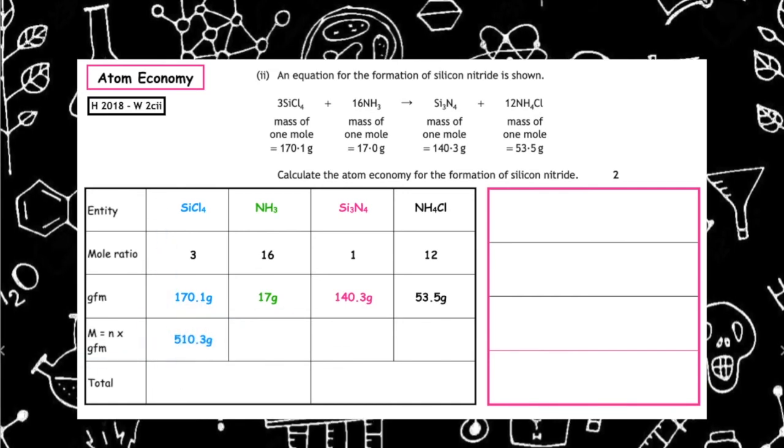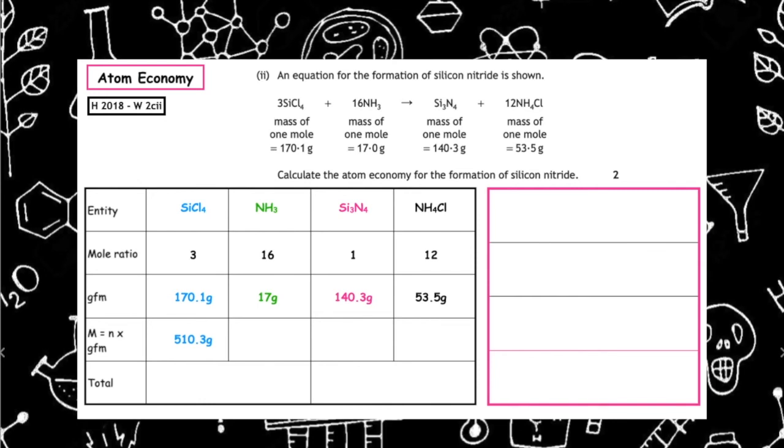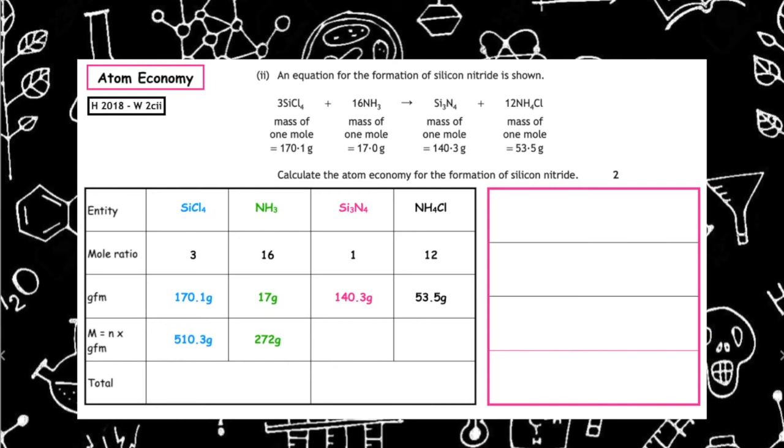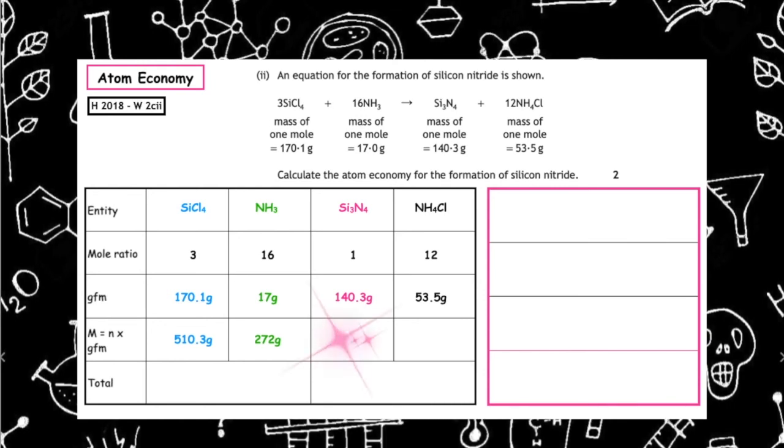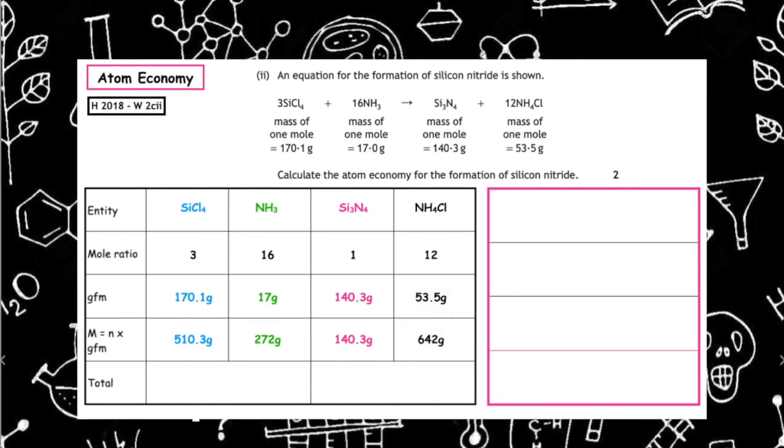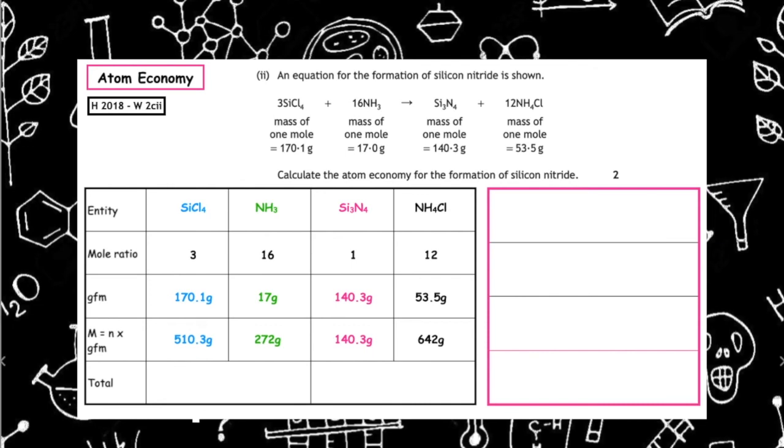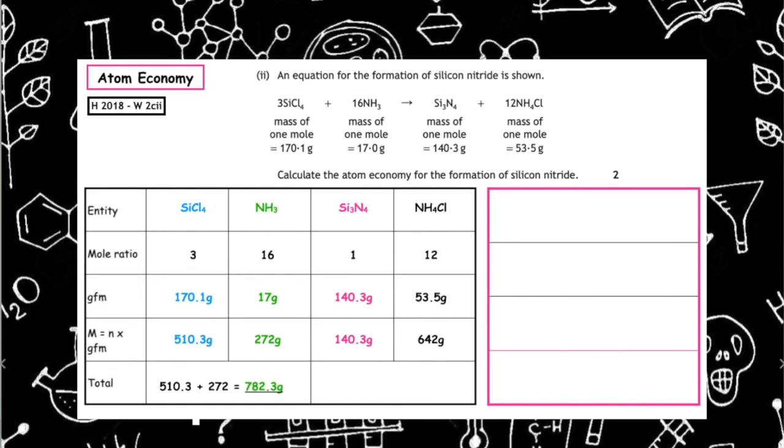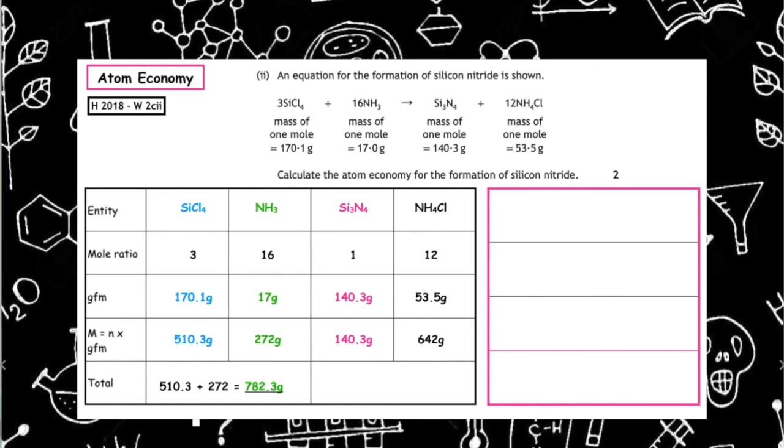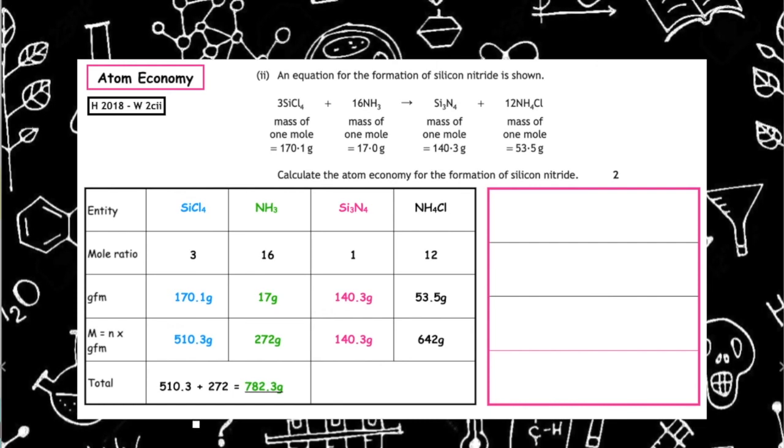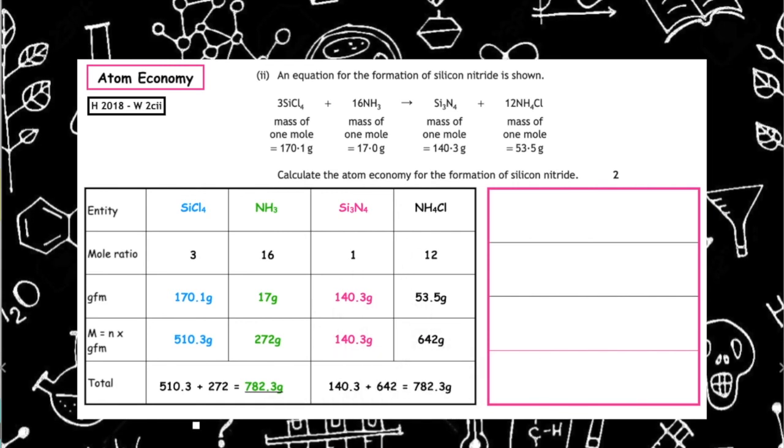3 times 170.1 gives 510.3, 16 times 17 gives 272, 1 times 140.3 is 140.3, and 12 times 53.5 comes in at 642. Our double check: what goes in must come out. We add up our total reactants, so we've got 510.3 grams plus 272 grams comes in at 782.3, and if we add up the total mass of our products, that also comes out at 782.3.